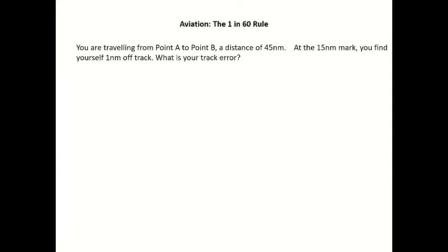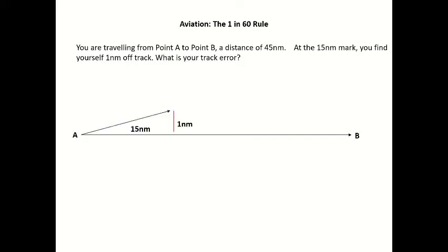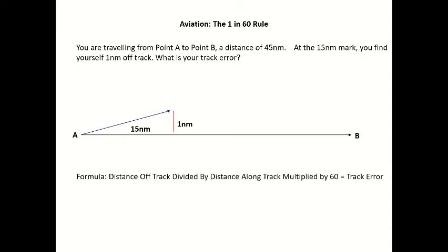Similar question to the last one. Travelling from point A to point B, a distance of 45 nautical miles. At the 15 nautical mile mark, you find yourself 1 nautical mile off track. What is your track error? Once again, draw the question out. Formula — always the same formula: distance off track divided by distance along track multiplied by 60 equals your track error. The answer: 1 nautical mile off track divided by 15 nautical miles along track, times 60, equals 4 degrees track error.